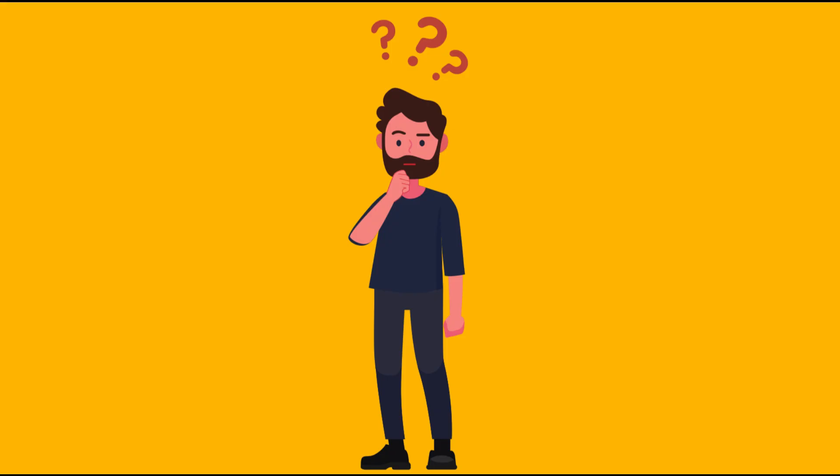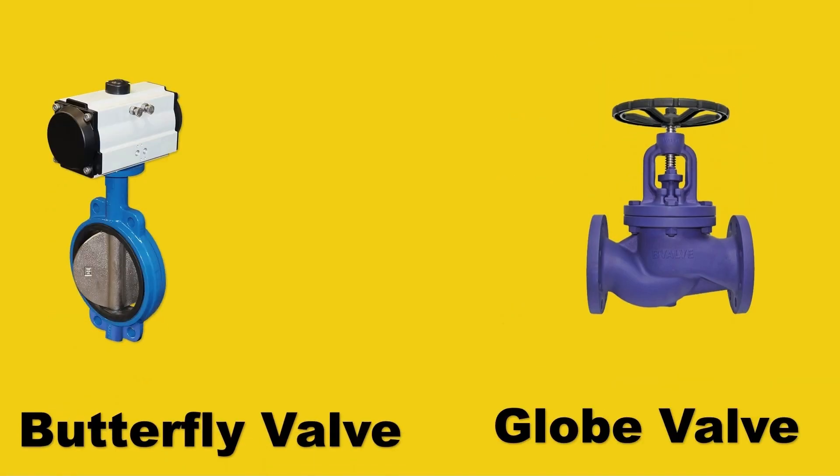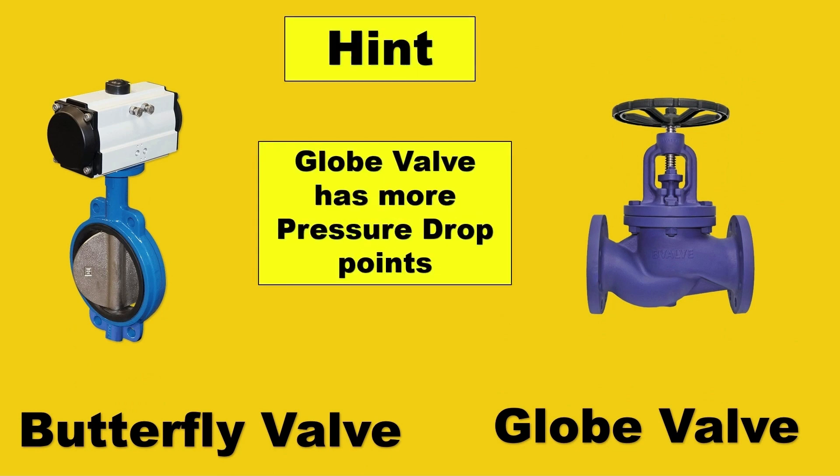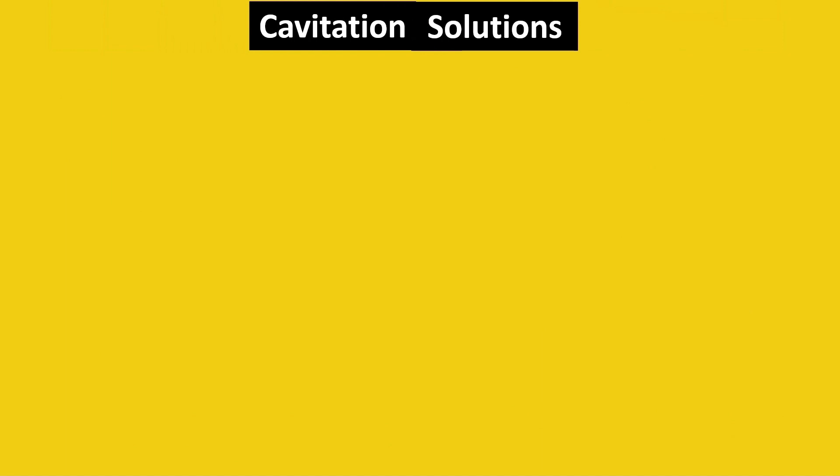Which valve is less prone to cavitation? Is it the butterfly valve or the globe valve? What do you think is the answer? I'll give you the hint. Globe valve has more pressure drop points as compared to butterfly. Tell me in the comments what you think.